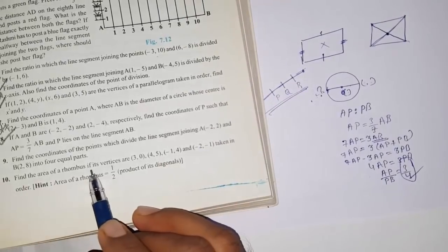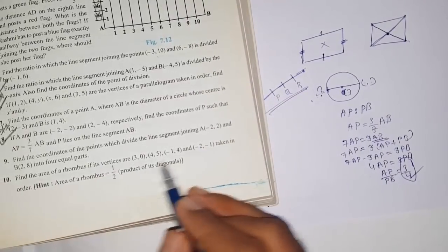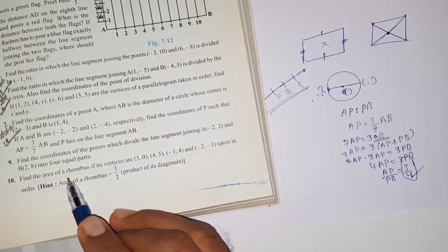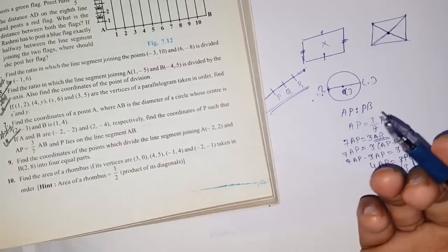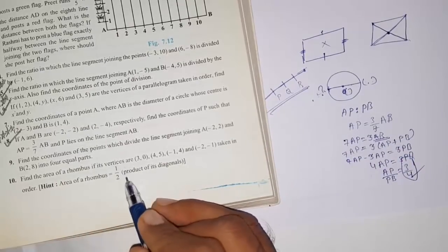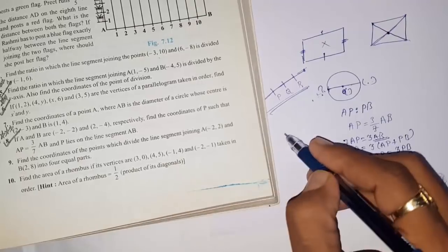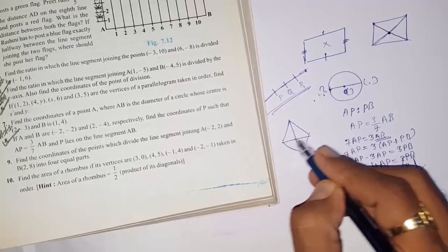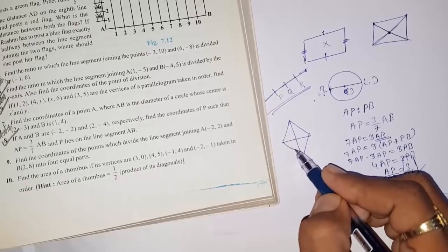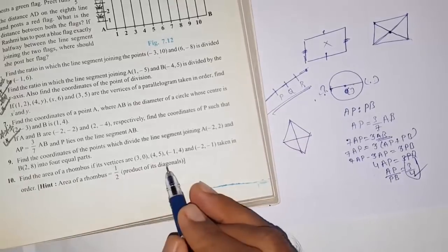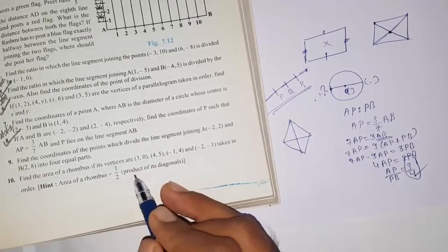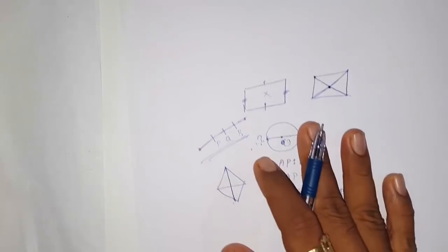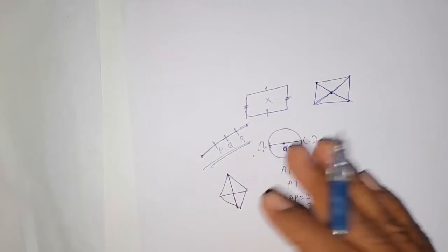The last question asks to find the area of a rhombus given its four vertices. The formula is: Area = (1/2) × d1 × d2, where d1 and d2 are the diagonals. Find the length of each diagonal using the distance formula, then substitute into this formula to get the area. This concludes the section formula and midpoint formula part; the area of triangle formula will be explained in the next video.